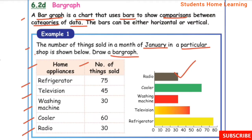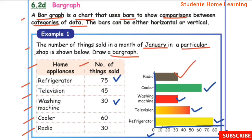This is how the bar graph is drawn. Draw the axes. Numbers range from 30 to 75, so count from 0 to 80 by 10s. Refrigerator: bar drawn up to 75. Television: bar up to 45. Washing machine: bar up to 30. Cooler: bar up to 60. Radio: bar up to 30. The bar graph is now complete.